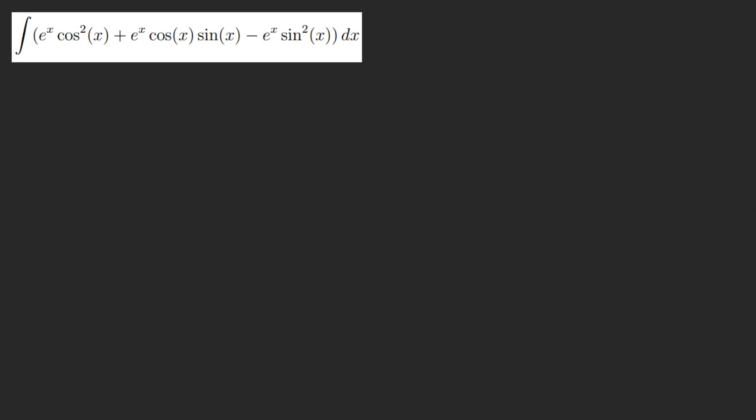Wait a minute. This is e to the x cosine of 2x, right? And then plus e to the x sine of x cosine of x. Wait a minute. This is a half of sine of 2x.